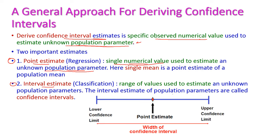The numerical value is nothing but a single mean which is used to estimate the population mean — a single numerical value which is normally the mean value of population, mu. The interval estimate is a range of values used to estimate an unknown population parameter — the range between the lower confidence limit to upper confidence limit. This is the width of the confidence interval. The interval estimate of population parameters is called the confidence interval.